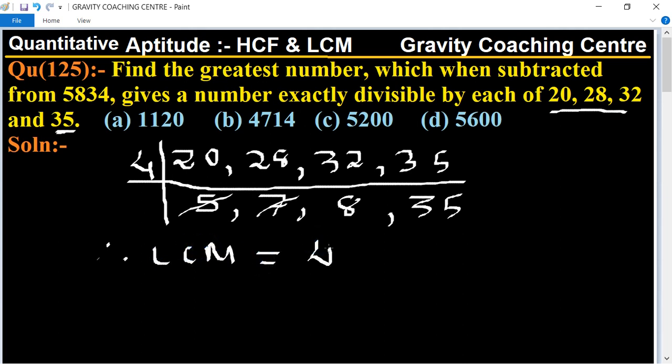4 multiply 8 multiply 35, and its product equals 1120. So 1120 is exactly divisible by 20, 28, 32, and 35.